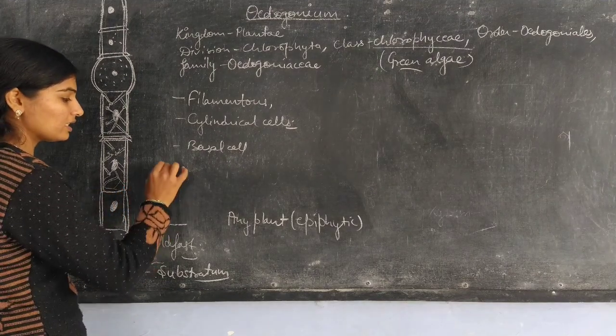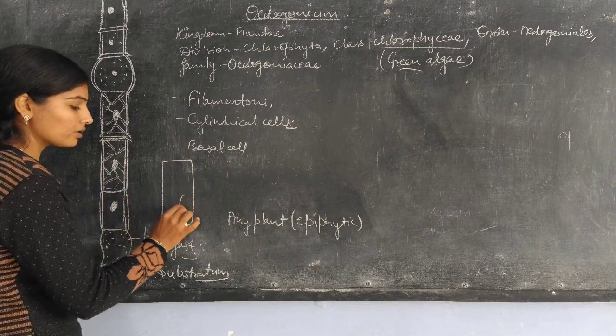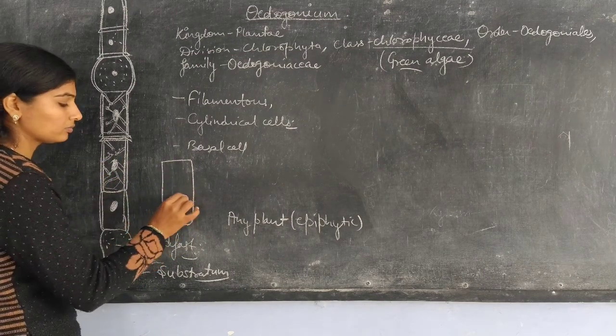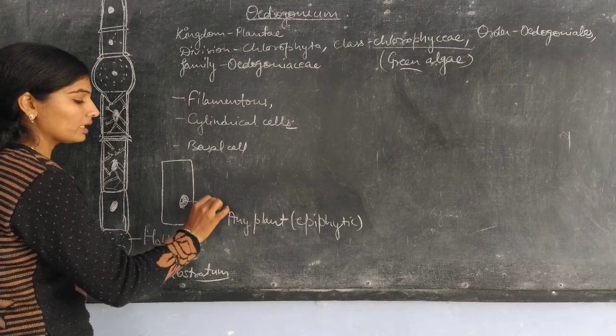One vegetative cell has a large nucleus. This is the nucleus.